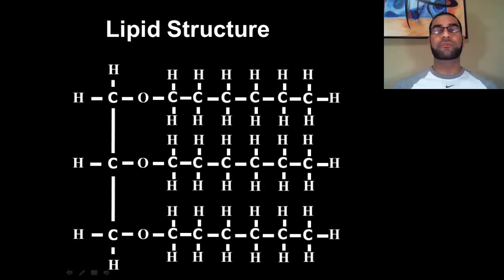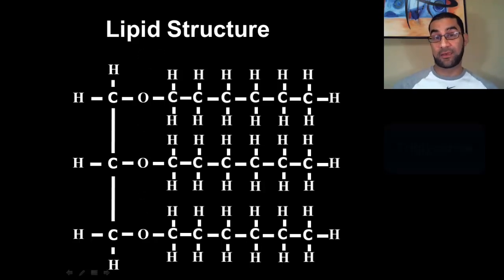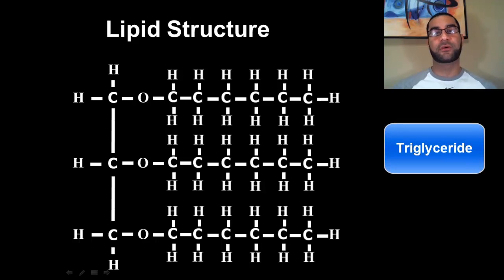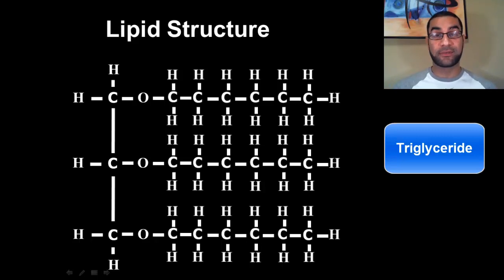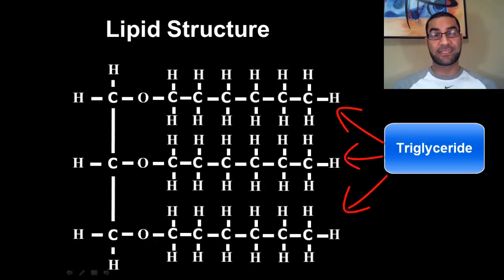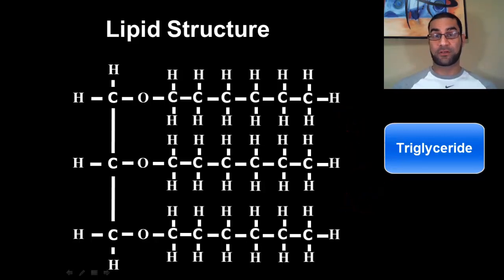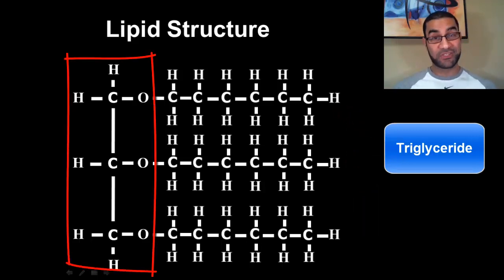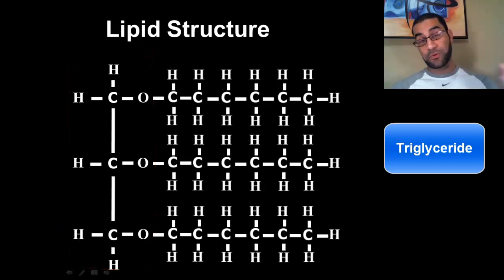If I asked you how many water molecules you lose in dehydration synthesis for a lipid, the answer is three, because each fatty acid tail has to combine and lose a water in the process. What you're left with is what we consider a basic lipid molecule, also commonly referred to as a triglyceride. The prefix 'tri' means three — and there are three fatty acid tails. So a triglyceride is a glycerol backbone with three fatty acid tails extending off of it.